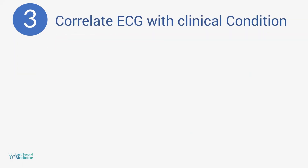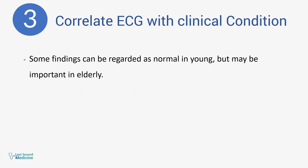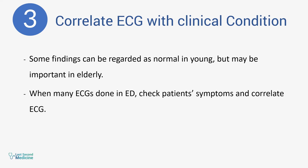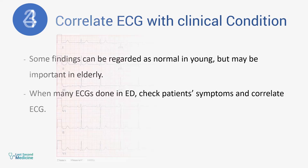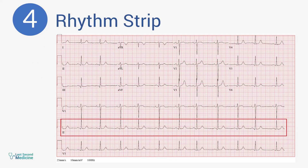Number three: correlate ECG clinically. Whenever you come across an ECG which is abnormal, correlate clinically with the patient's condition. Sometimes apparent ST elevation can be discarded as high takeoff in a young, fit individual with no typical symptoms, while the same changes may need further workup and evaluation in an elderly patient with diabetes and hypertension. Clinical correlation is also important in a busy emergency department — check the patient's symptoms and correlate the ECG before rushing to tell a patient sitting comfortably in bed that he has myocardial infarction, when in fact the ECG was of another patient on the side bed.